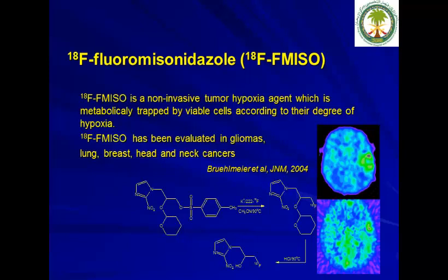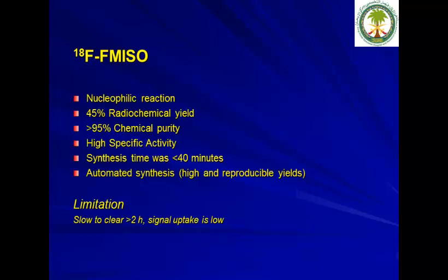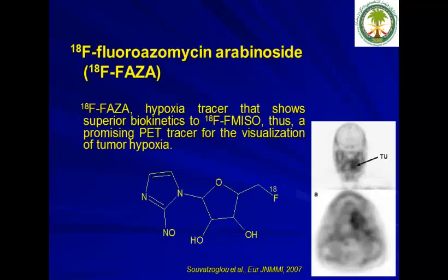Fluoromisonidazole (FMISO) is a non-invasive tumor hypoxia agent. Production is straightforward and takes about 40 minutes. However, this radiotracer has a significant limitation: clearance from the body is very slow — more than 2 hours — so imaging cannot be done before 2 hours. Therefore, a new radiotracer called F18-FAZA was developed as another hypoxic tracer, and it has been shown to be superior to FMISO, with essentially the same production method.